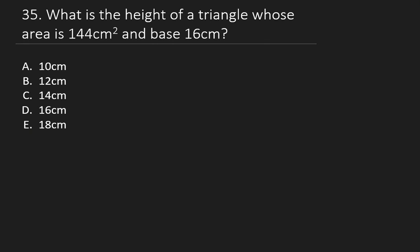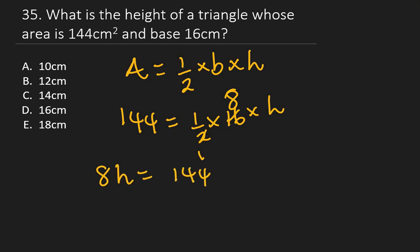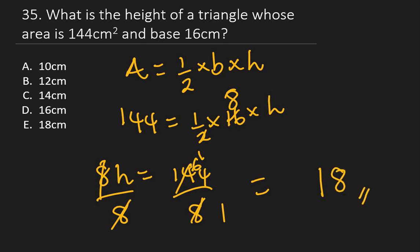Question 35: Find the height of a triangle whose area is 144 cm² and base is 16 cm. Area of triangle = ½ × base × height. So 144 = ½ × 16 × h. Simplify: 144 = 8h. Divide both sides by 8: h = 144 ÷ 8 = 18 cm. The right answer is E: 18 cm.